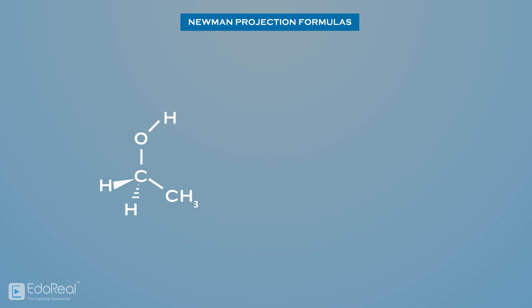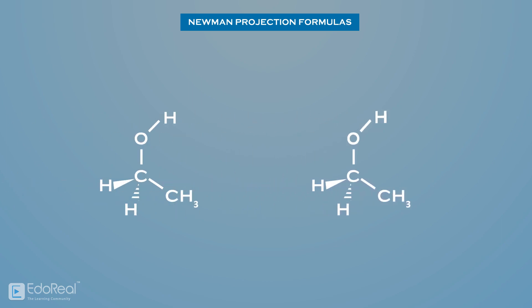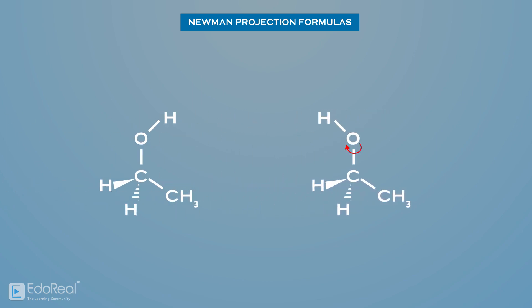Any two arrangements of atoms in a molecule that differ by rotation about single bonds can be referred to as different conformations. In order to better visualize different conformations of a molecule, it is convenient to use Newman projection.